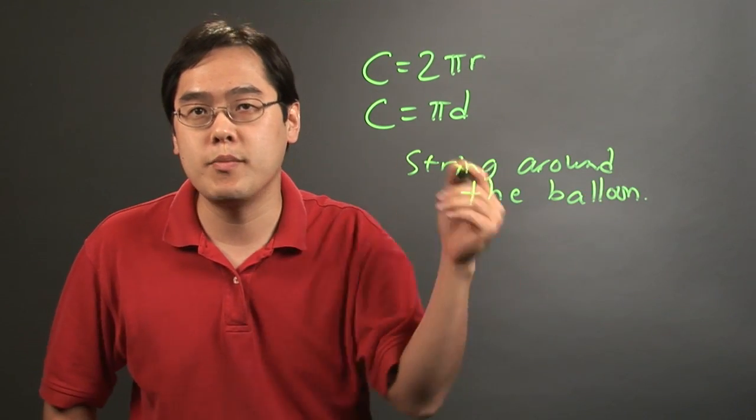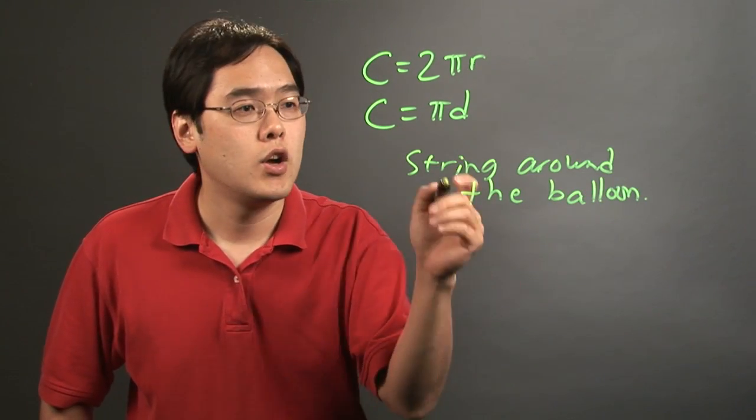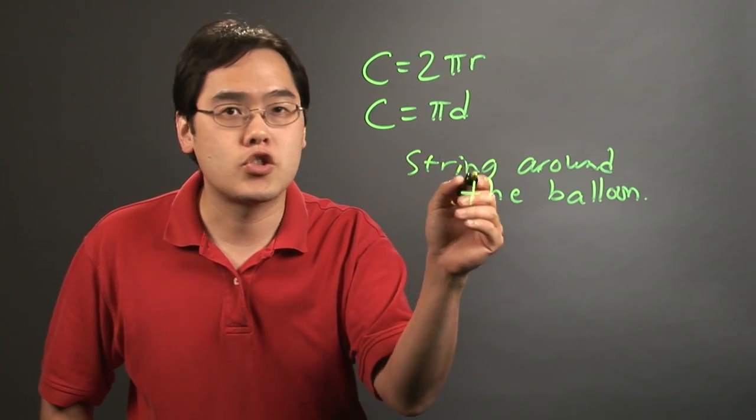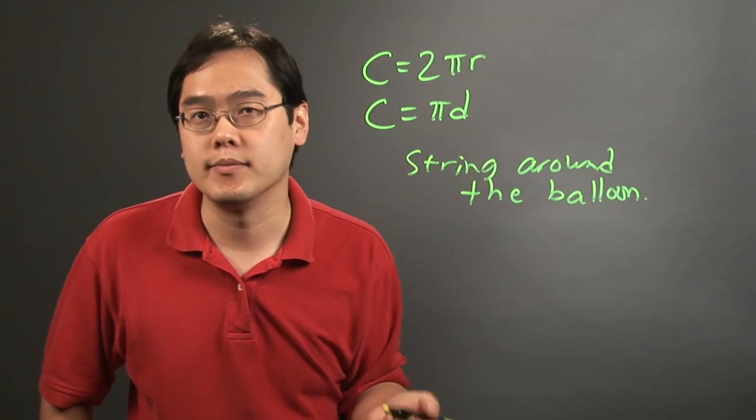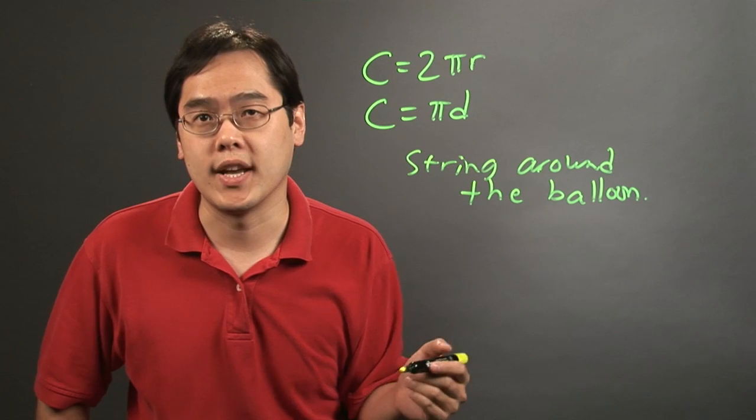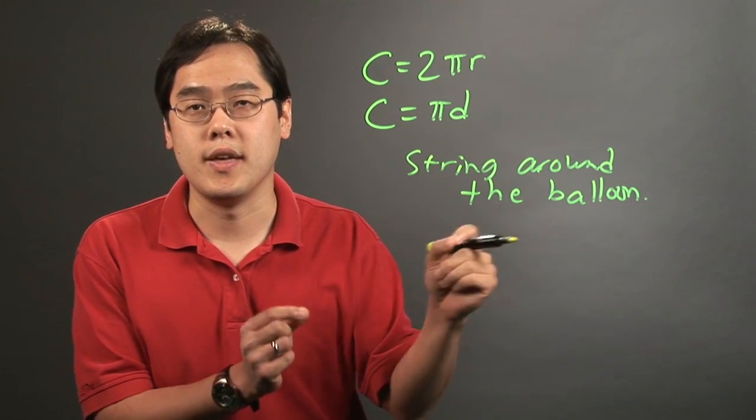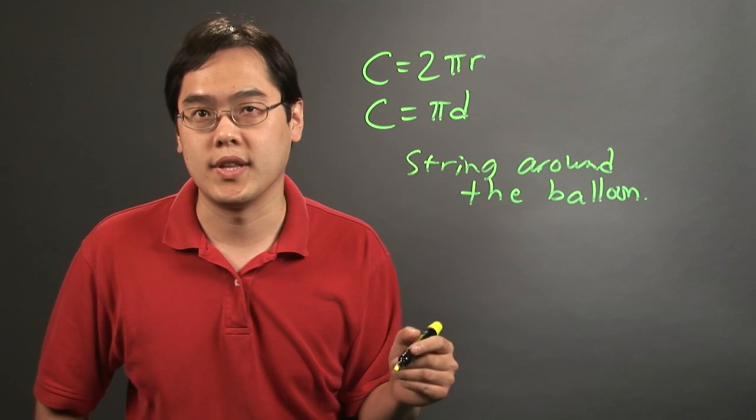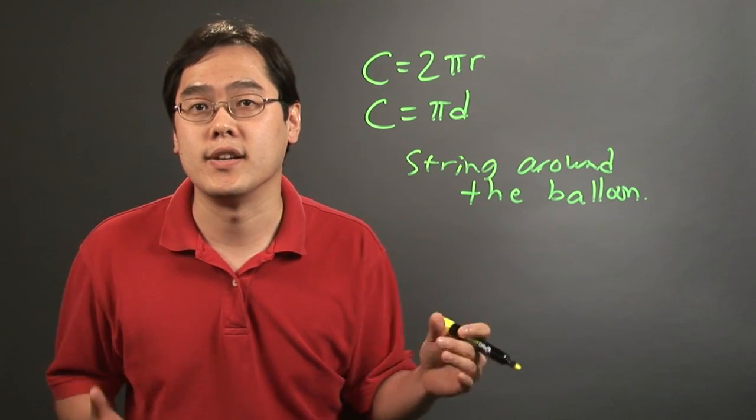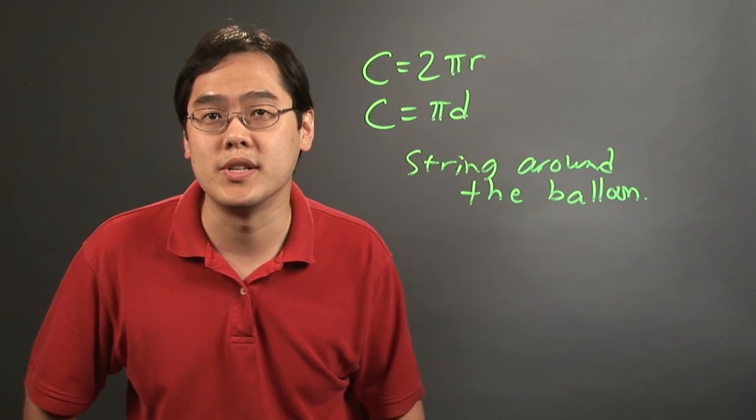Tie a string around the balloon and make a mark where the string starts to overlap with the beginning. Once you make that mark, place the piece of string next to a ruler, and that'll give you the circumference of the balloon.